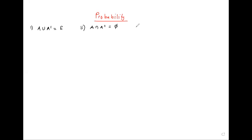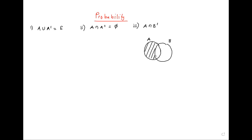We also know that if we get A intersection B complement — if this is A and this is B — A intersection B complement is this section here. Meaning that we can also describe this using A minus just the intersection of A and B, from this Venn diagram here.